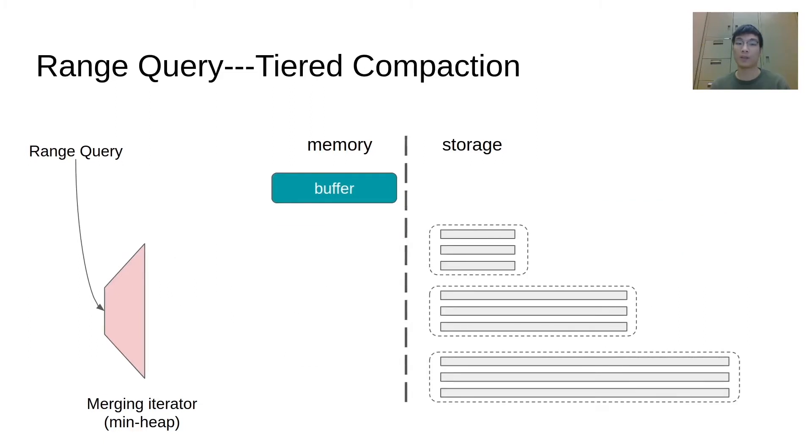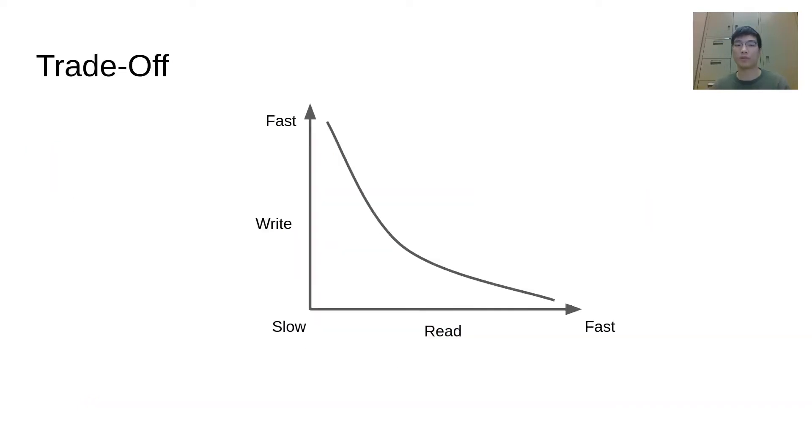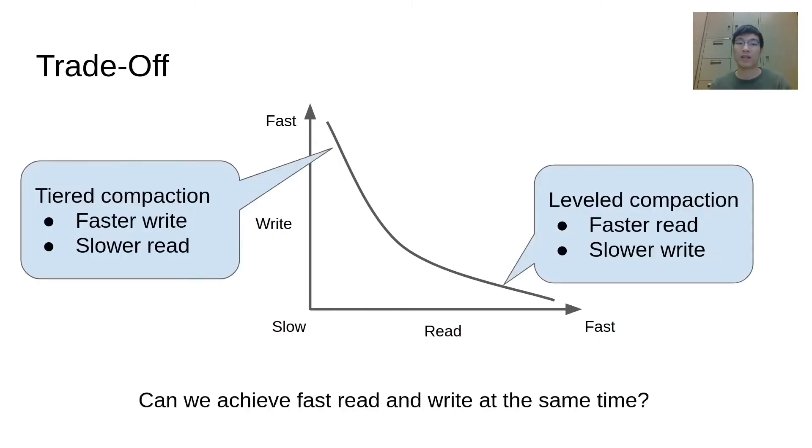It doesn't sound bad as long as we don't have too many runs. However, because tiered compaction maintains multiple sorted runs for write efficiency, the merging iterator needs to access more runs, which leads to even worse range query performance. Different compaction policies are essentially making different trade-offs between read and write efficiency. So we want to ask, can we achieve a fast read and write at the same time?